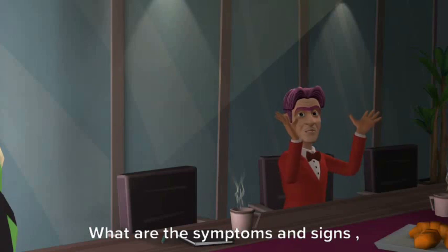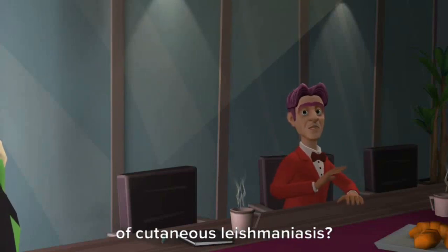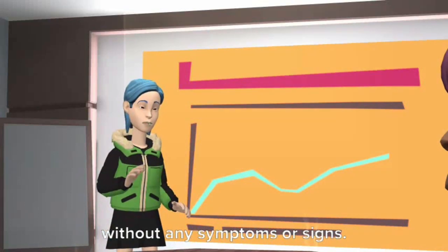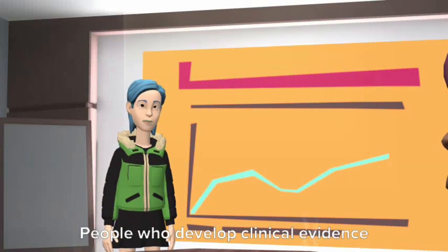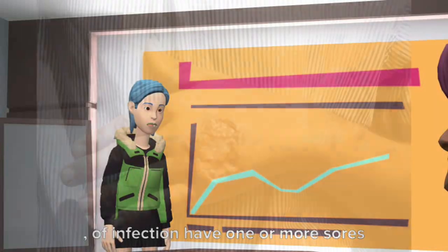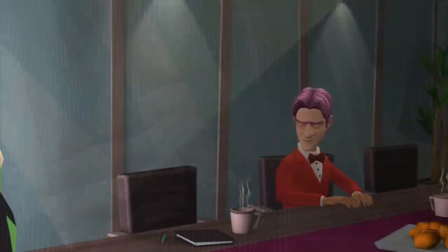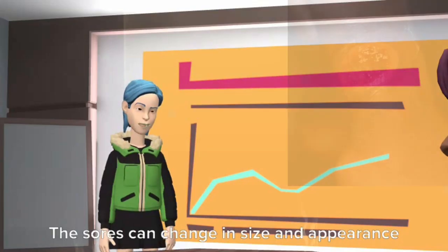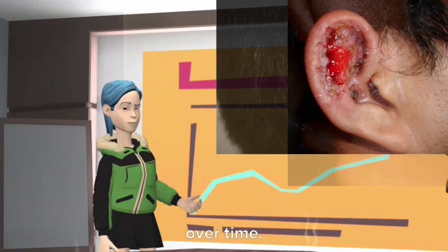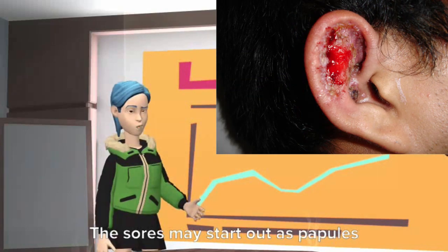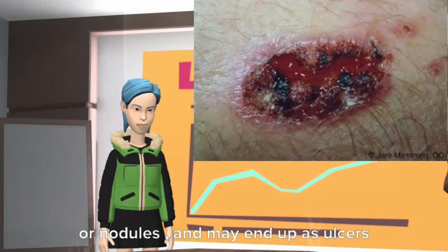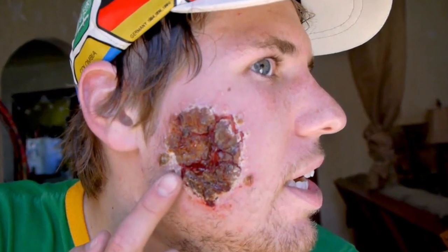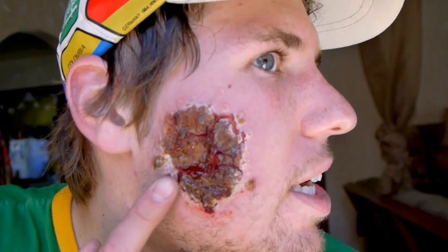What are the symptoms and signs of Cutaneous Leishmaniasis? Some people have a silent infection without any symptoms or signs. People who develop clinical evidence of infection have one or more sores on their skin. The sores can change in size and appearance over time. The sores may start out as papules or nodules and may end up as ulcers. Skin ulcers may be covered by scab or crust. The sores usually are painless but can be painful.